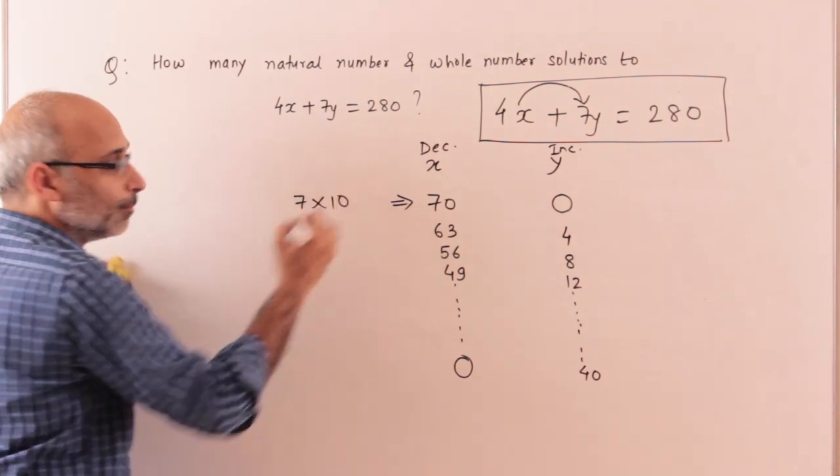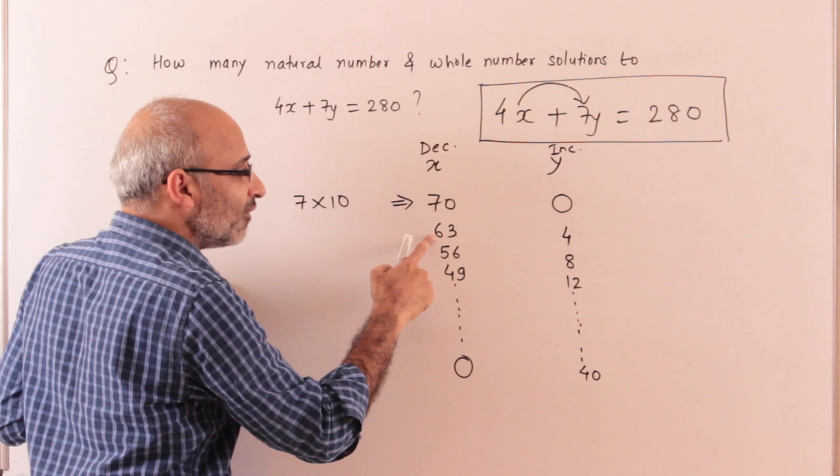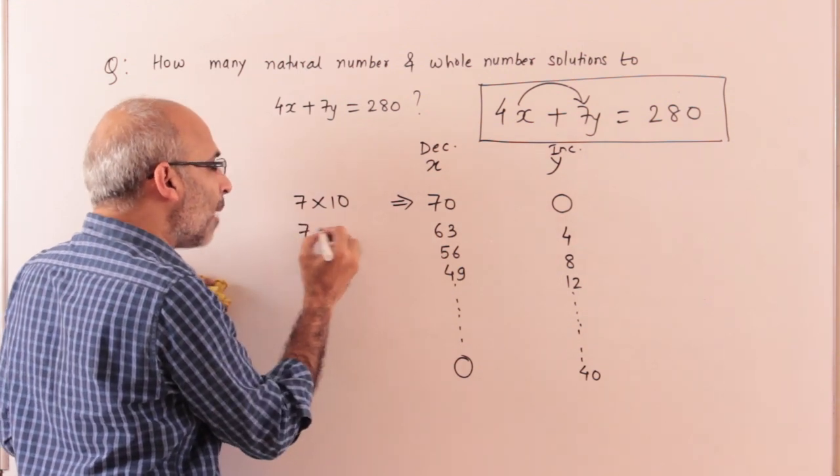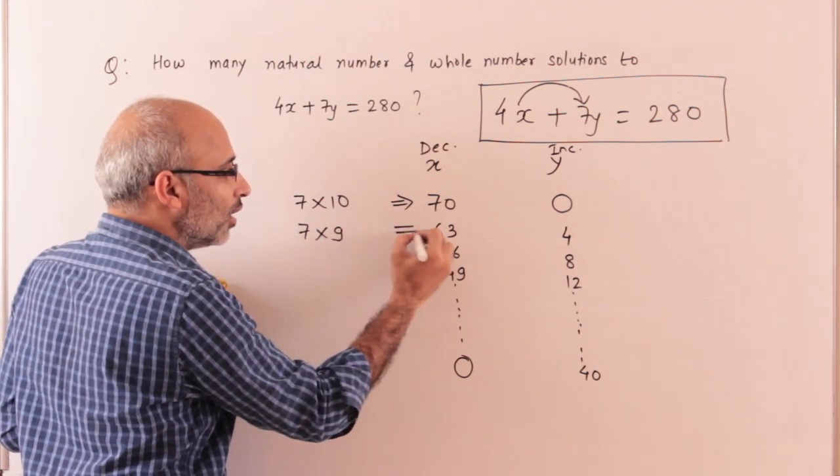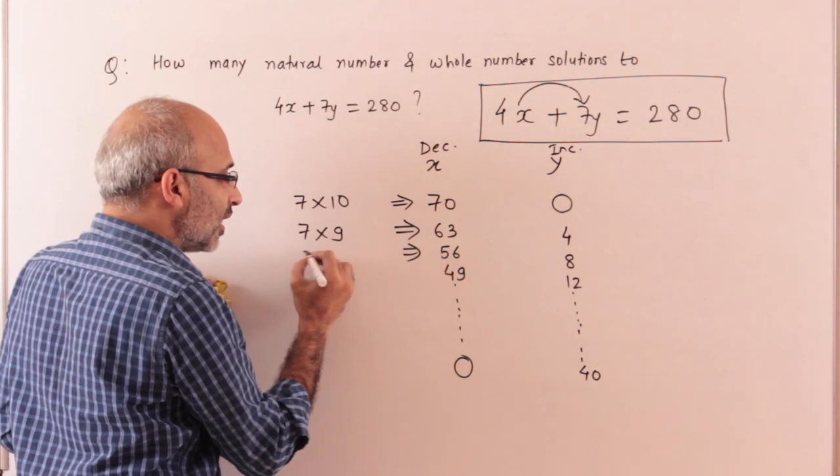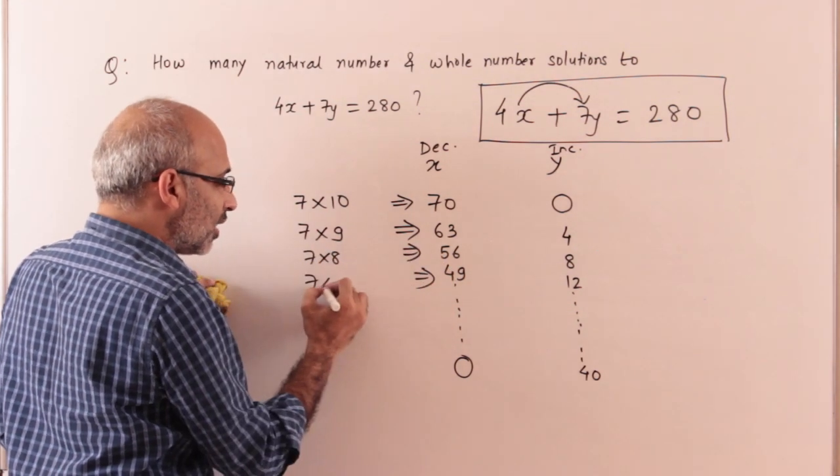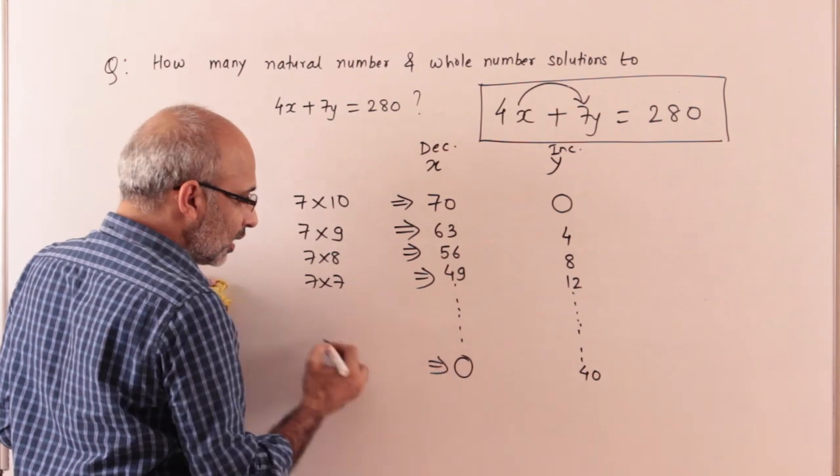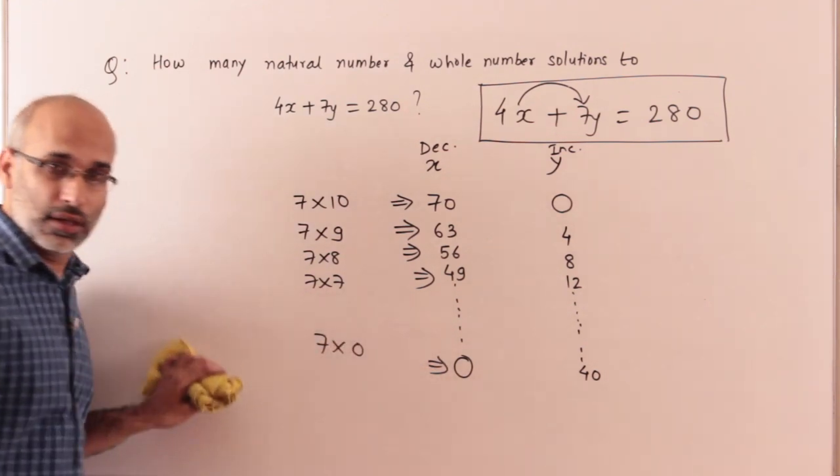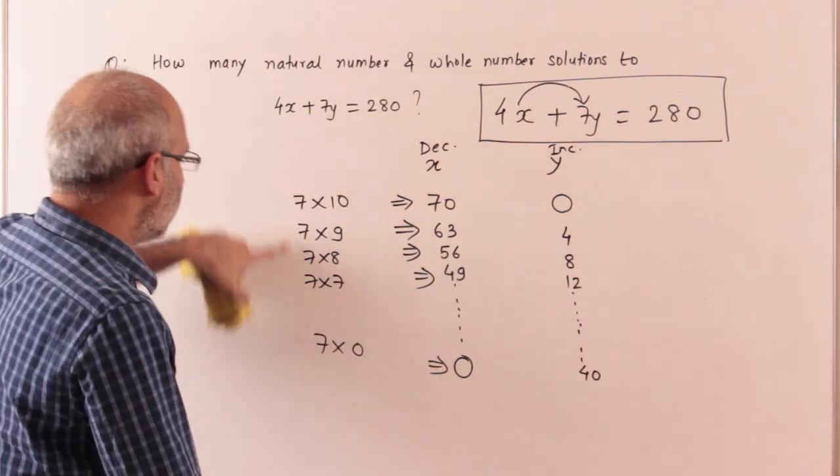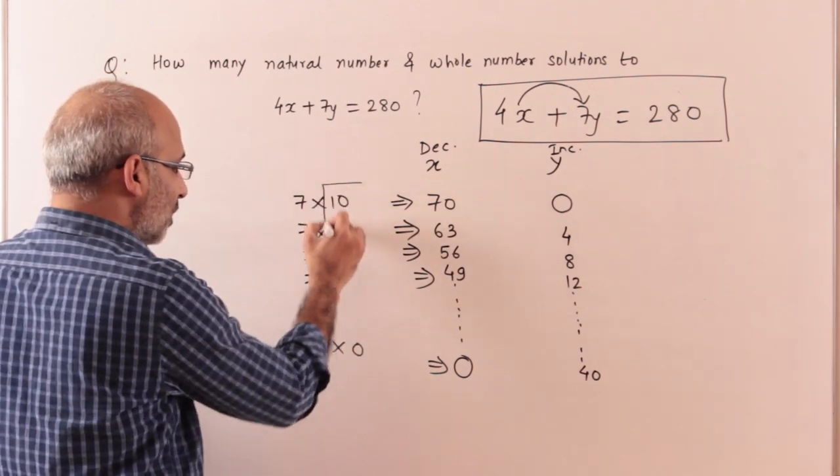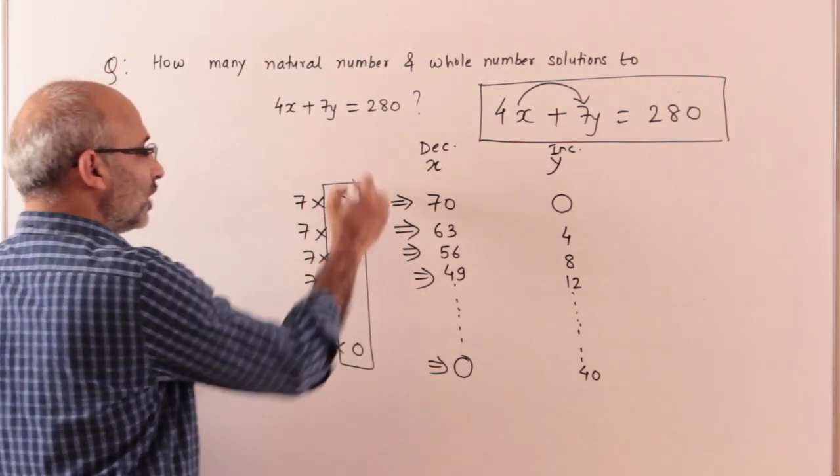This will be 7 times 10, and if this is also decreasing, this will be 7 times 9, this will be 7 times 8, this will be 7 times 7, and the last one will be 7 times 0.